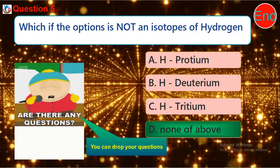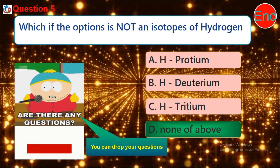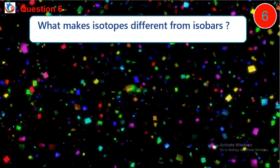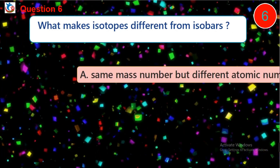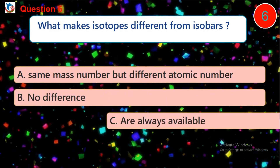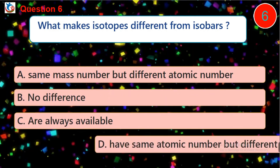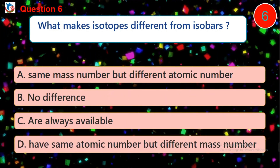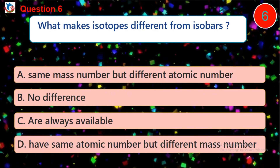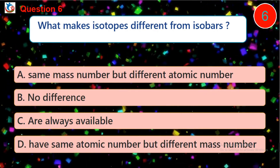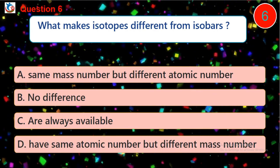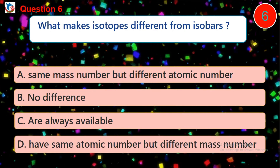Question six: what makes isotopes different from isobars? A. same mass number but different atomic number, B. no difference, C. are always available, D. have the same atomic number but different mass number.